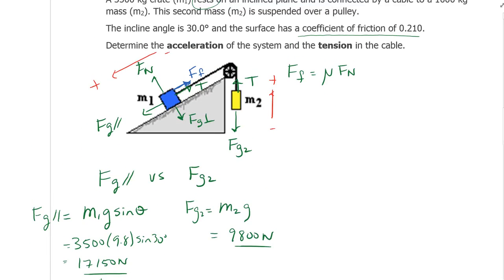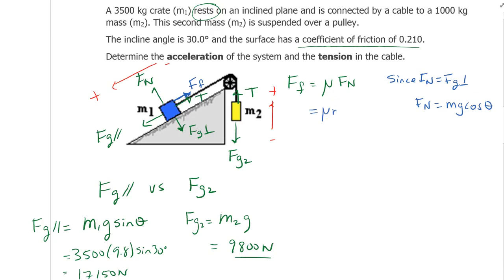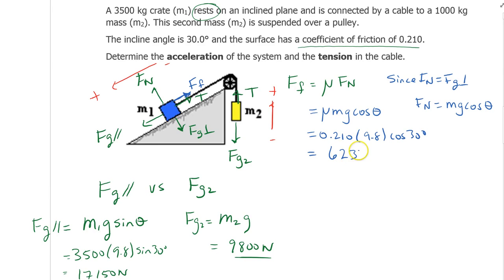Now let's calculate the force of friction. Force of friction equals mu times the normal force. The normal force equals Fg perpendicular, which equals Mg times cos theta. Plugging in the numbers: 0.210 times 9.8 times cosine of 30 degrees gives us a friction force of 6,237.98 newtons.